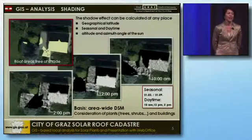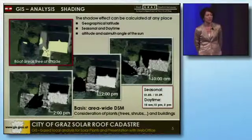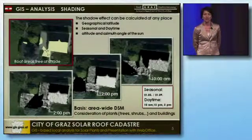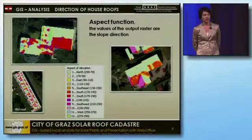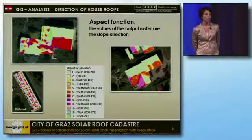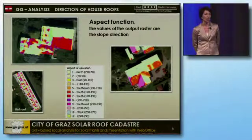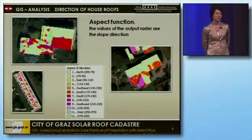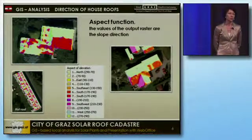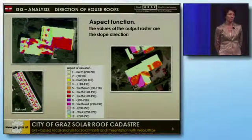In the next step, we calculated the direction of the house roofs using the aspect function. As you can see on the slide, the colors purple, red, and orange indicate southwest, south, and southeast respectively, and show those areas of the roof which are suitable for solar installations.